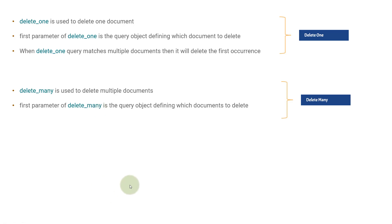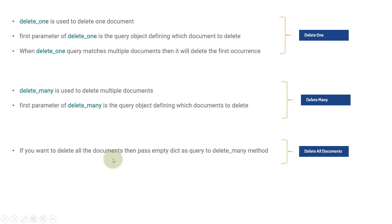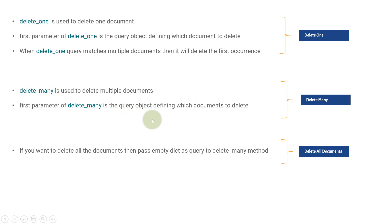If you want to delete all the documents in a collection, pass an empty dict to delete_many. You call the same method delete_many without any query object and it will delete all the documents.